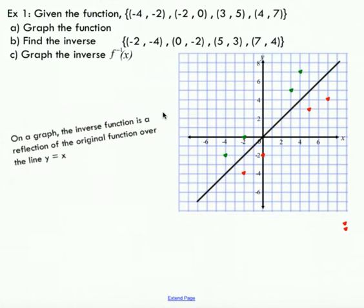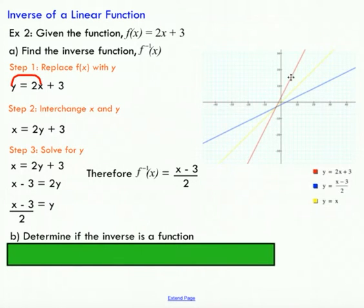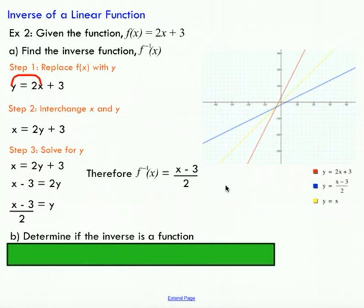The interesting property we saw is that inverse functions are a reflection of the original function over the line y equals x. You can actually check your answer by graphing it. Here, the red line is our original function f(x) equals 2x plus 3, and the blue line is what we're assuming our inverse is. I've also graphed y equals x, and you can see they are in fact a reflection over that line. So we can conclude this is, in fact, our inverse.